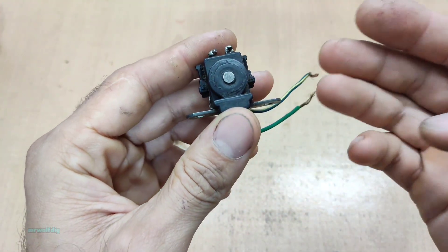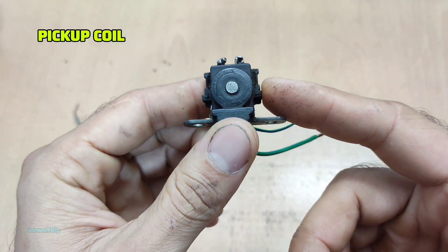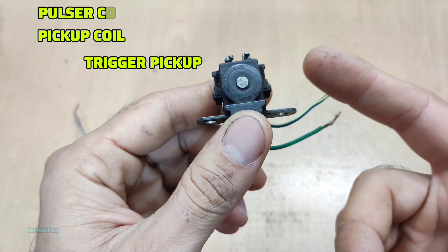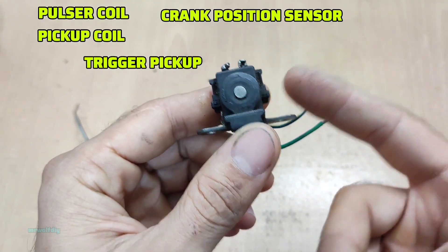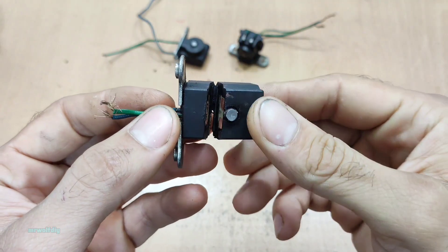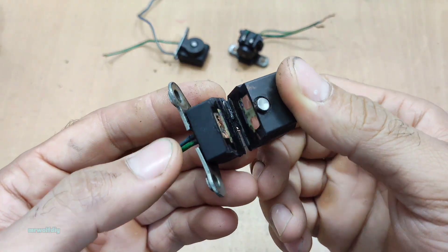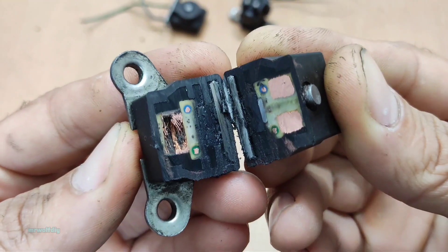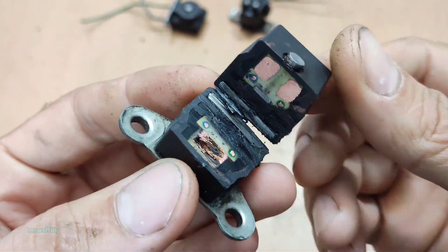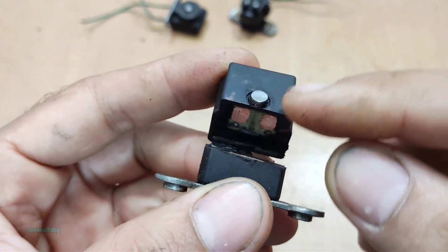This part is known by different names like a pickup coil, trigger pickup, a pulser coil, crank position sensor and others. To help you understand better, I've cut a pickup in half so you can see the inside. As you can see it's made of the coil wire and a magnetic core.